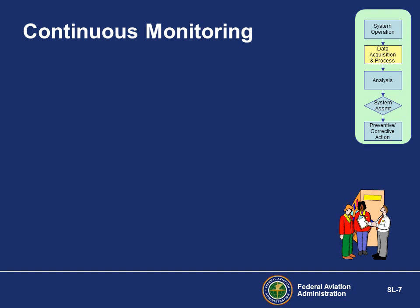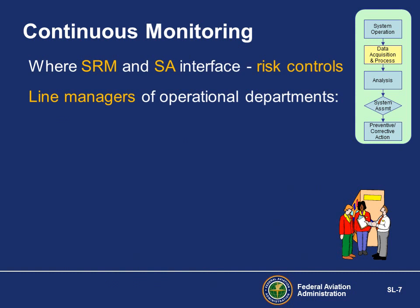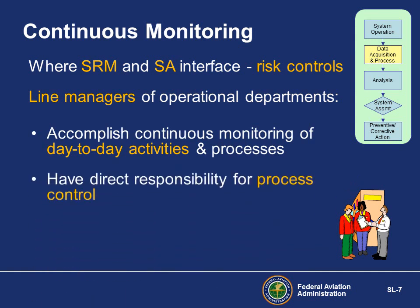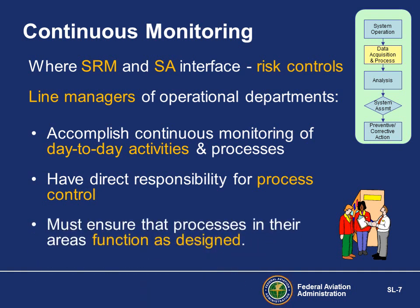What is continuous monitoring and who has responsibility for it? Continuous monitoring is where the controls developed in SRM are directly monitored and evaluated for the safety assurance input — it's the link between the two. Line managers have direct responsibility to monitor daily activities and processes within their area, assure that processes, procedures, and their controls are complied with, and periodically assess the status of risk controls to assure they are functioning as designed. Line organizations are the domain of the technical experts in any organization.